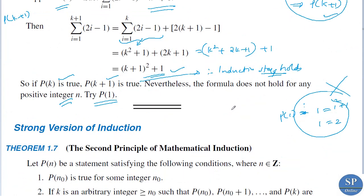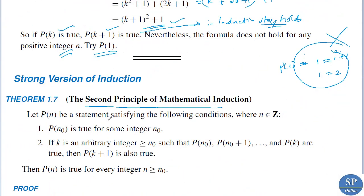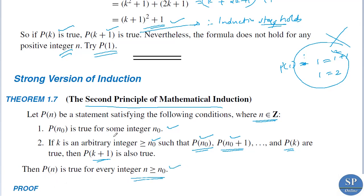Next, the strong version of induction — the second principle of mathematical induction. Let P(n) be a statement satisfying the following conditions where n belongs to the integers. First condition: P(n₀) is true for some integer n₀. Second condition: if k is an arbitrary integer greater than or equal to n₀ such that P(n₀), P(n₀+1), etc., and P(k) are all true, then P(k+1) is also true.